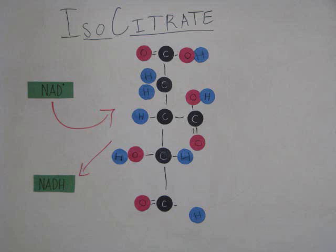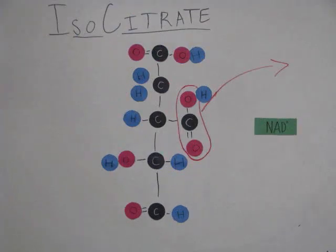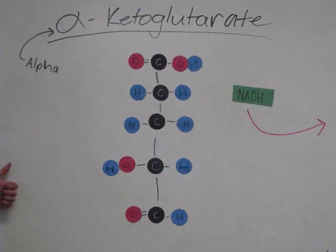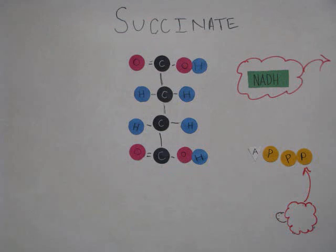Isocitrate then loses a hydrogen and two electrons to NAD+ to form another NADH. Then it loses another CO2 group to form alpha-ketoglutarate. Alpha-ketoglutarate then forms another NADH by, once again, losing a hydrogen and two electrons, and it loses another CO2 group. The extra energy from these losses is stored in ATP, which is formed from an ADP and inorganic phosphate found outside of the molecule. Water is then added to form succinate.